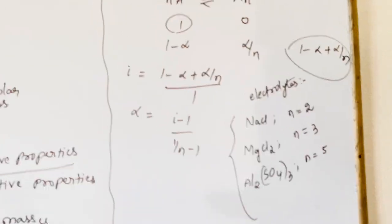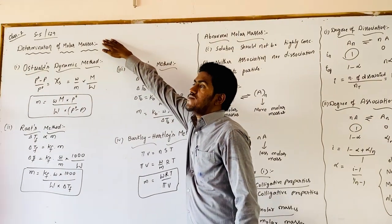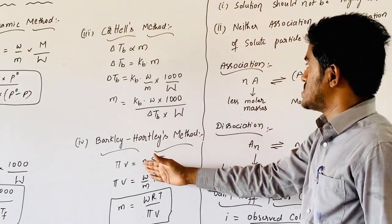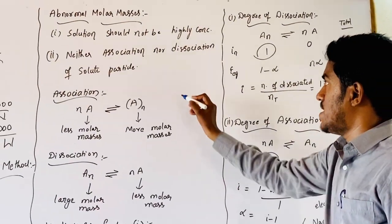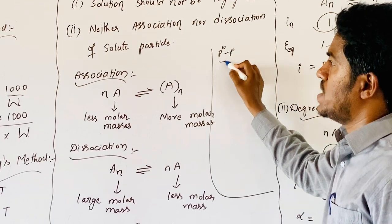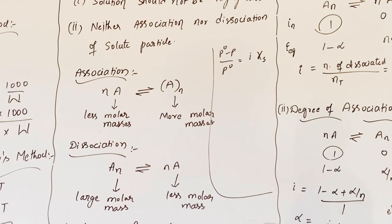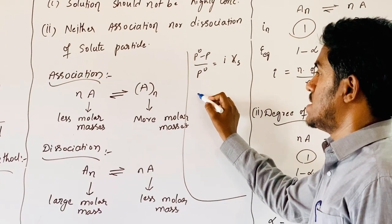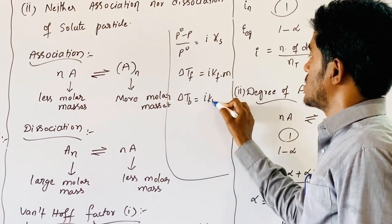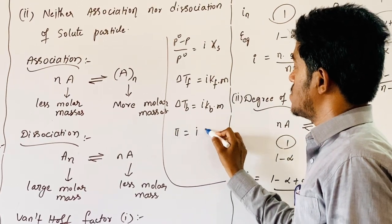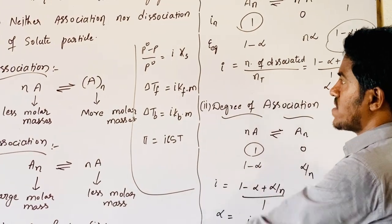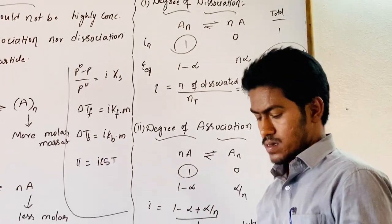In this session, we discussed the determination of molar masses as one application of colligative properties, using the Ostwald-Walker method, Rast method, Cottrell method, and Berkeley-Hartley method. The applications of the Van't Hoff factor i are: (P0 minus P)/P0 equals i times chi; delta Tf equals i times Kf times m; delta Tb equals i times Kb times m; and pi equals i times C times R times T, where C is concentration, R is the gas constant, and T is temperature in Kelvin. Thanks for watching.